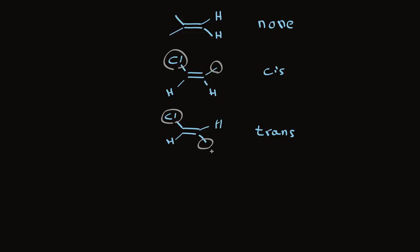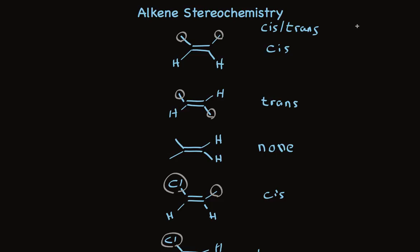Now take a look at this more complicated example. We see two chlorines in a trans relationship to each other, but we also have a bromine here — and this bromine, which is heavier than chlorine, might be thought to be highest priority, and we might call this cis rather than trans. My point is that for tri-substituted alkenes, the cis and trans nomenclature does not work well and is not used. We need to go to another convention for stating the stereochemistry of compounds like this. Rather than cis and trans terminology, the formal convention is Z and E. Z stands for zusammen, which in German means together, and E stands for entgegen, which means opposite in German.